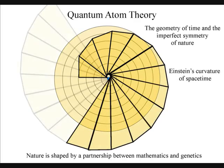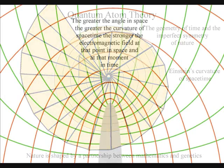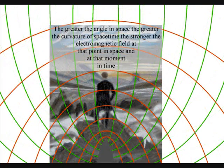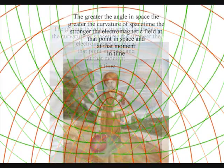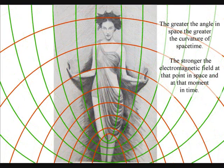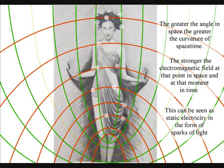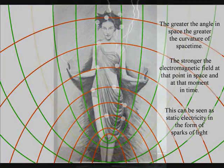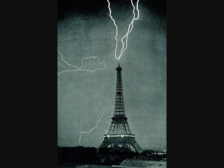The greater the angle in space, the greater the curvature of space-time, the stronger the electromagnetic field at that point in space, and at that moment in time. This can be seen as sparks of light associated with static electricity. The atoms will even distort the geometry of space-time, creating electrostatic discharge, in the form of lightning.